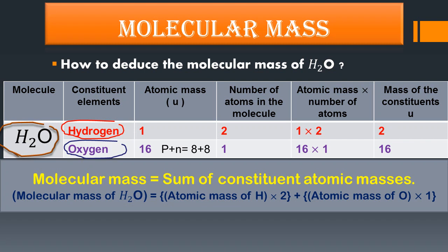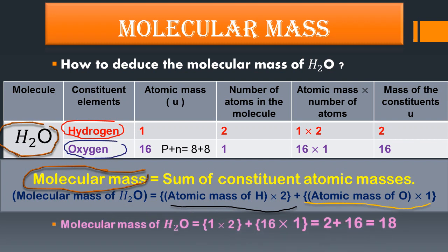The molecular mass formula is: molecular mass = sum of constituent atomic masses. So the molecular mass of water = (atomic mass of H × 2) + (atomic mass of O × 1) = (1 × 2) + (16 × 1) = 2 + 16 = 18. Therefore, the molecular mass of a water molecule is 18 u.